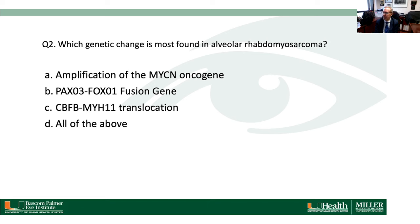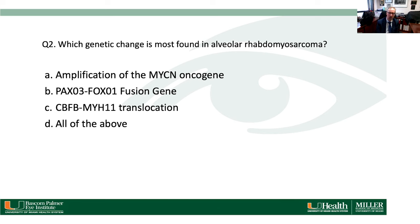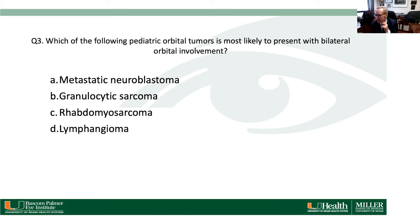Question 2: Which genetic change is most commonly found in alveolar rhabdomyosarcoma? The answer is the PAX3-FOXO1 fusion gene, which occurs in most alveolar type rhabdomyosarcomas. When we biopsy these tumors we send for H&E, immunohistochemistry for desmin and myogenin, and we send for the FISH study to look for the fusion gene.